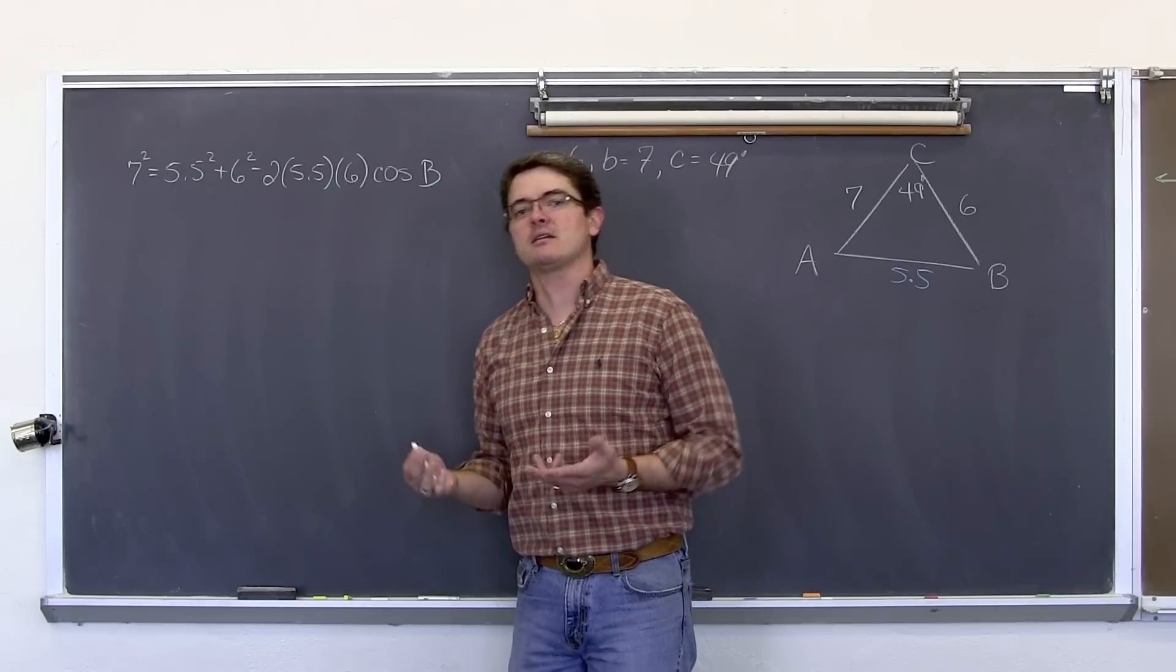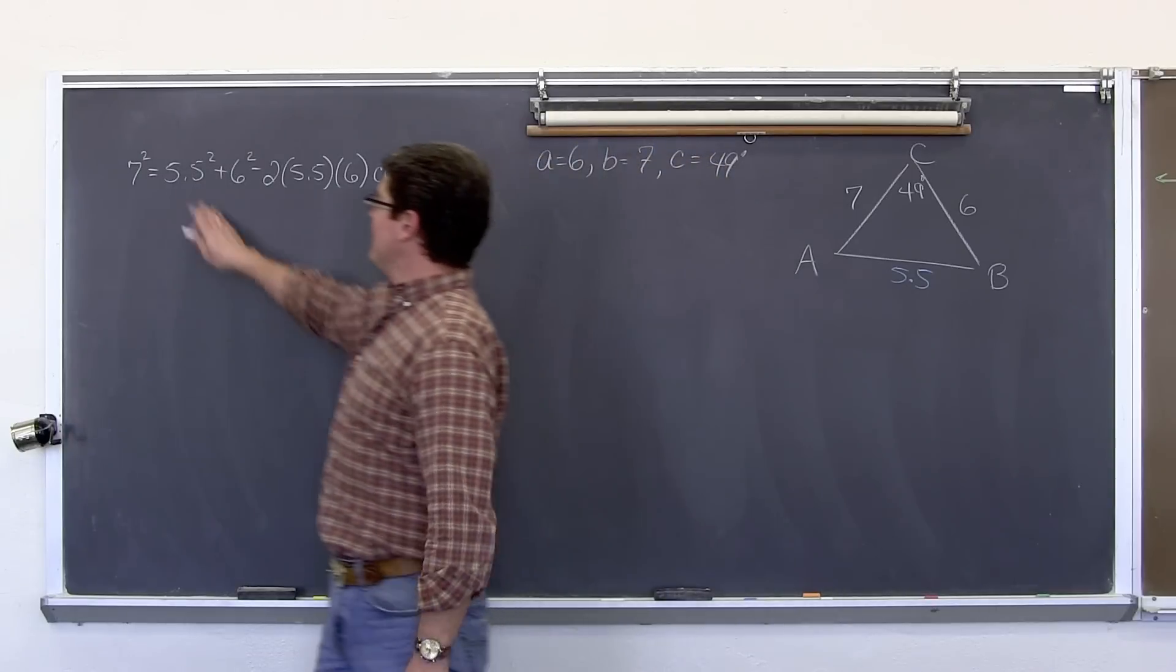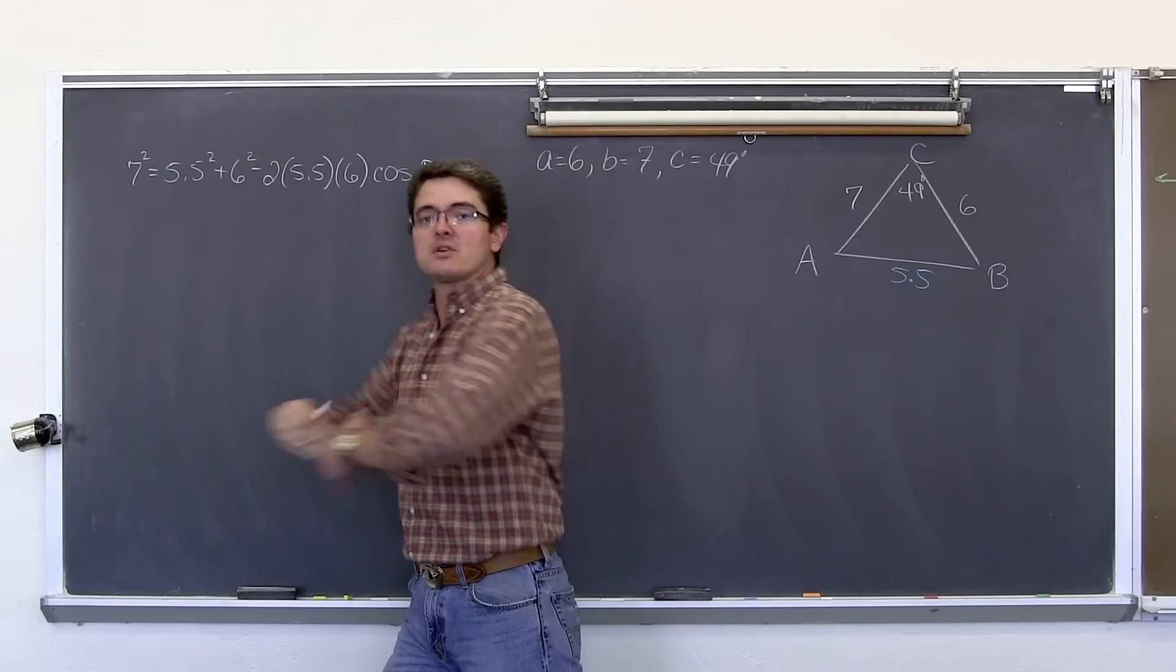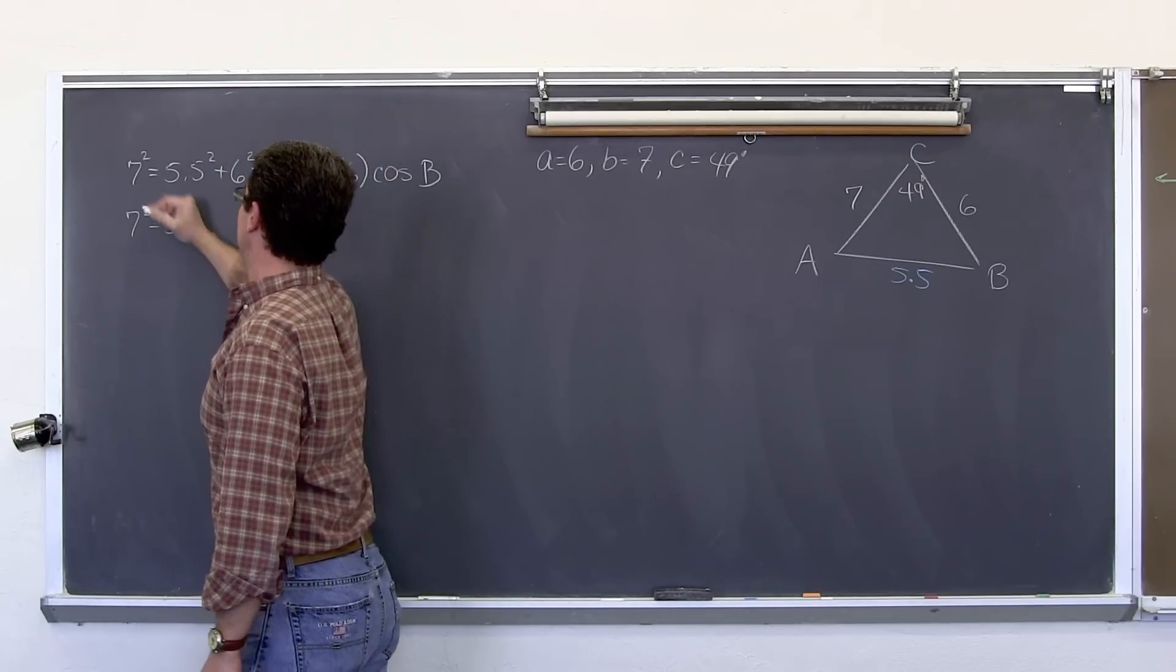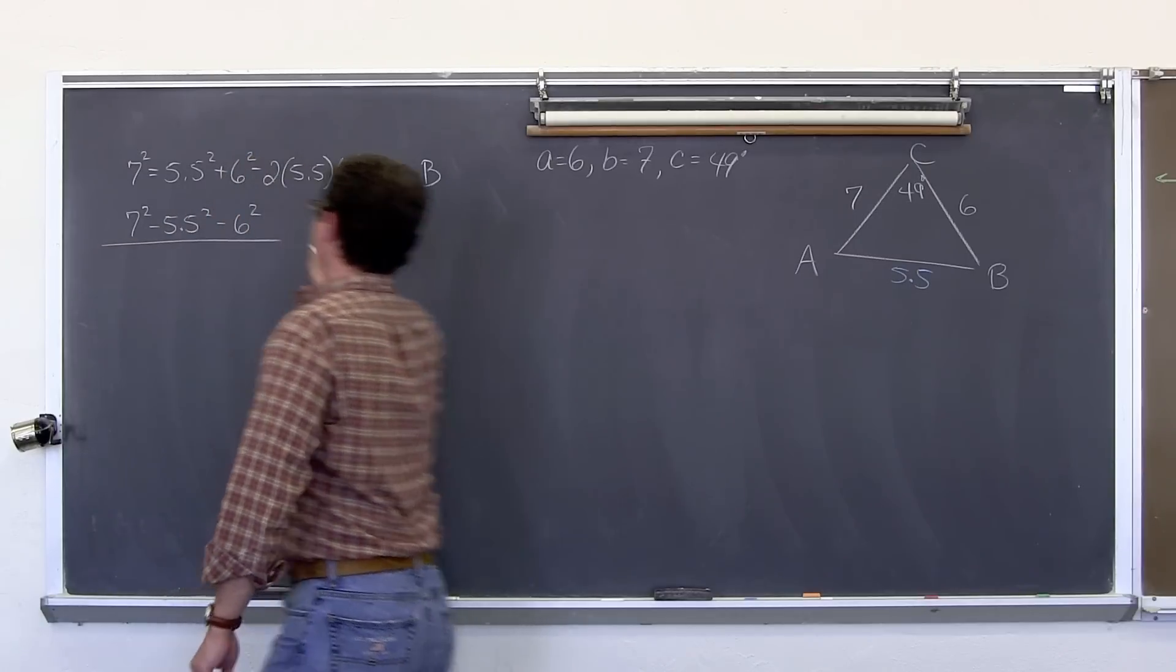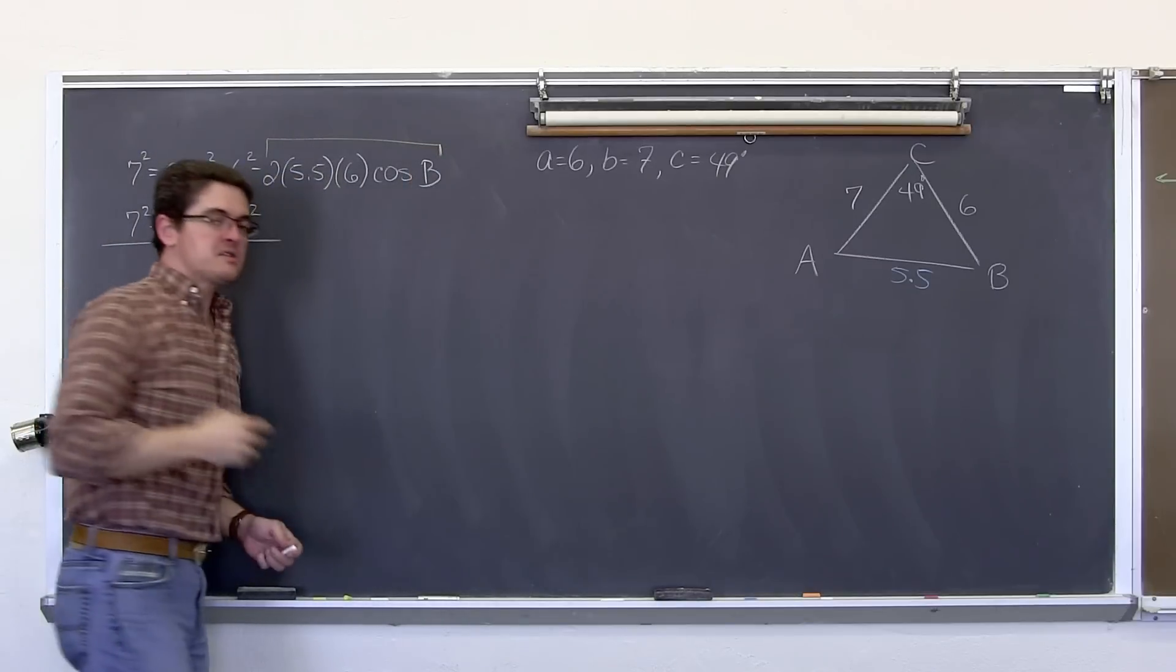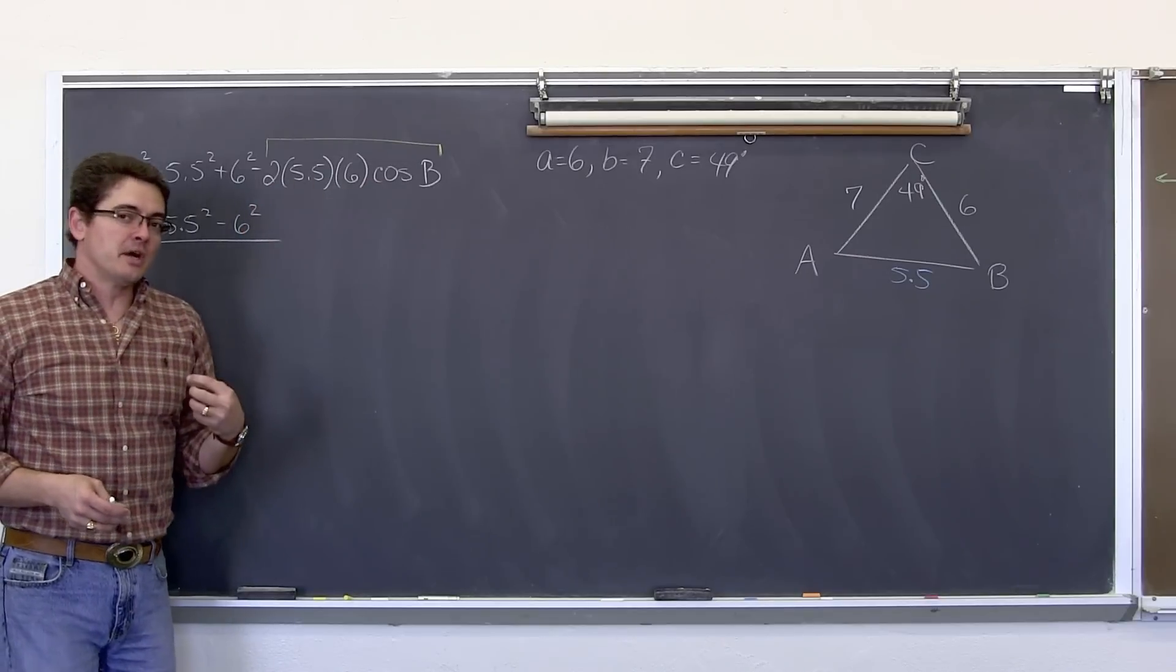I am going to go ahead and move everything over step by step so you see what I am doing. And then I am just going to pull the answer out of the calculator or off my tablet that I am using to quicken up the pace here. I am also going to keep all of this in exact form. So this 5.5 is not attached to anything. It is just a positive 5.5 squared. It is a positive 6 squared. So those are going to get moved over with subtraction. So it is going to be 7 squared minus 5.5 squared minus 6 squared. Now the 2, the 5.5 and the 6, these are all attached to the cosine of B.